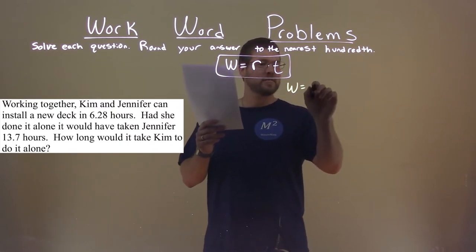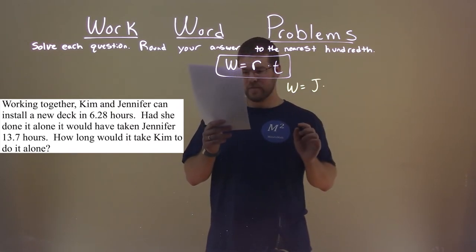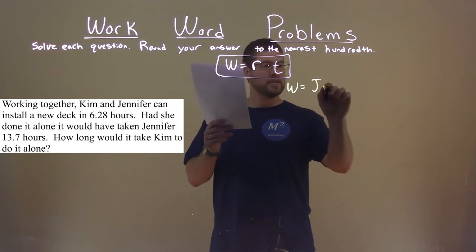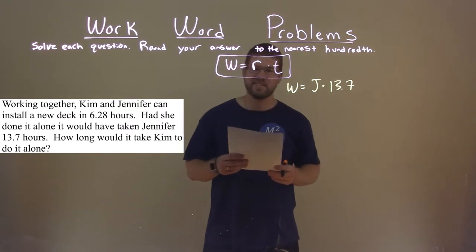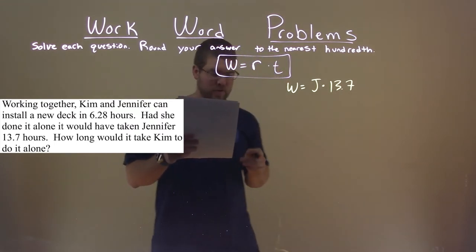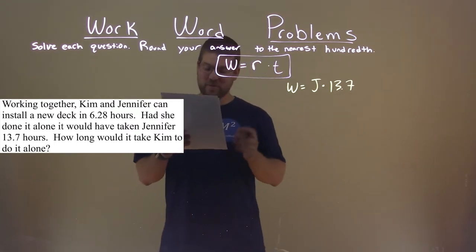The work done by Jennifer, so work equals Jennifer's rate times 13.7 hours. So it only took her 13.7 hours to install a whole deck. Again, don't trust that, unless we're really, really fast, I guess.